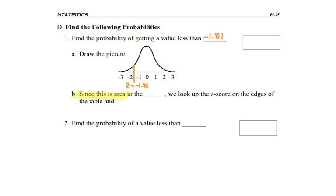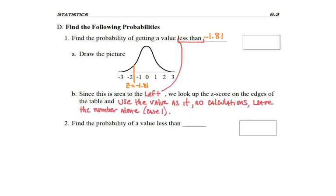And since this question asked me to find area to the left, and I know it wants area to the left because it asked me to find area less than that z-score, I'm going to look up the z-score and use the value as is. No calculations. Leave the number alone. This was case one.